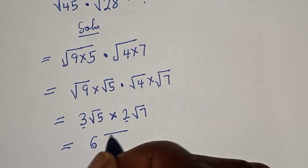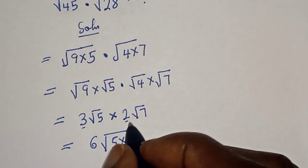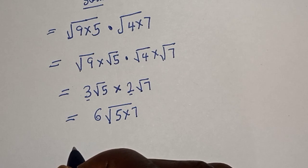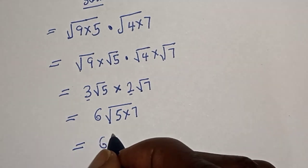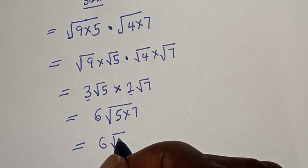6, square root of 5 times 7. This is equal to 6, square root of 7 times 5, 35.